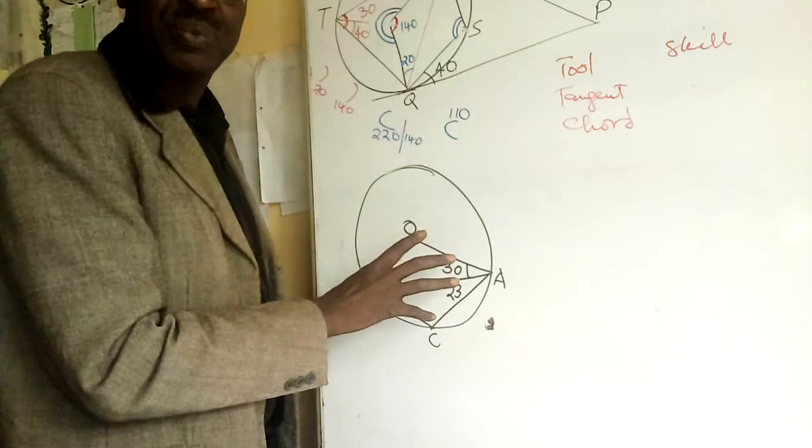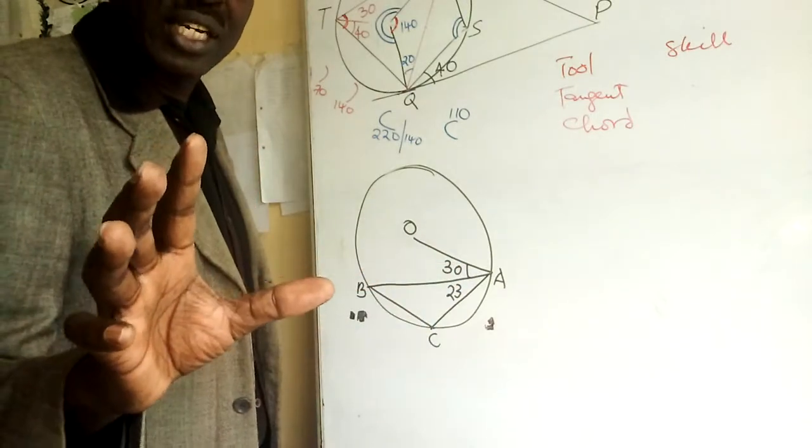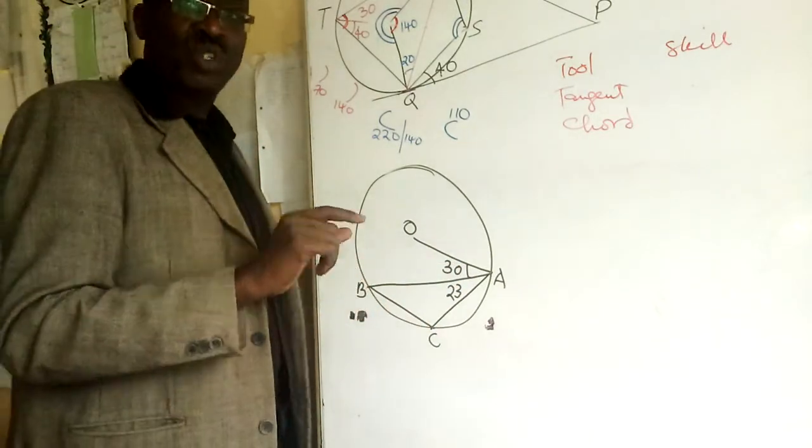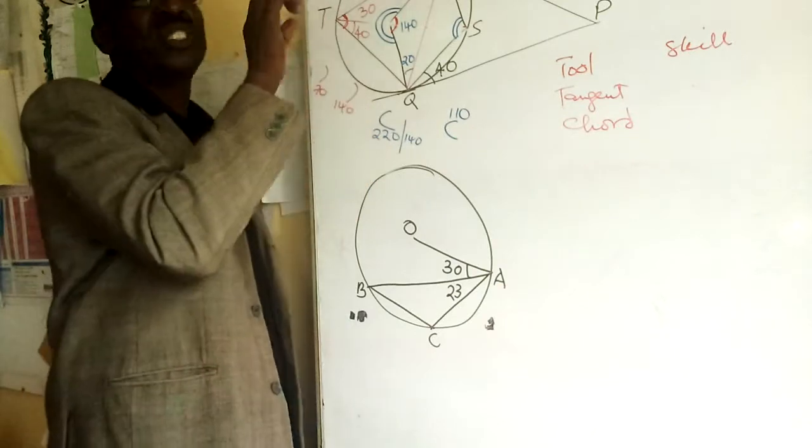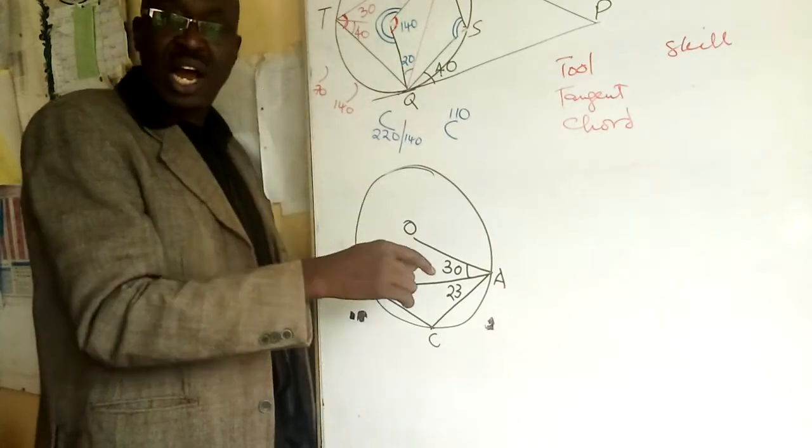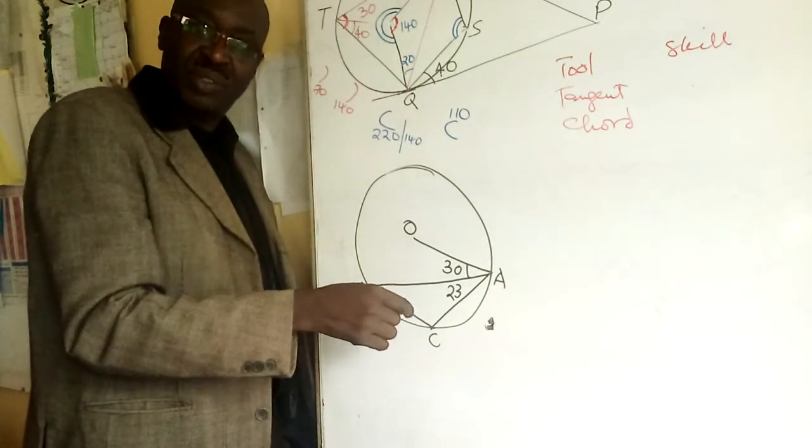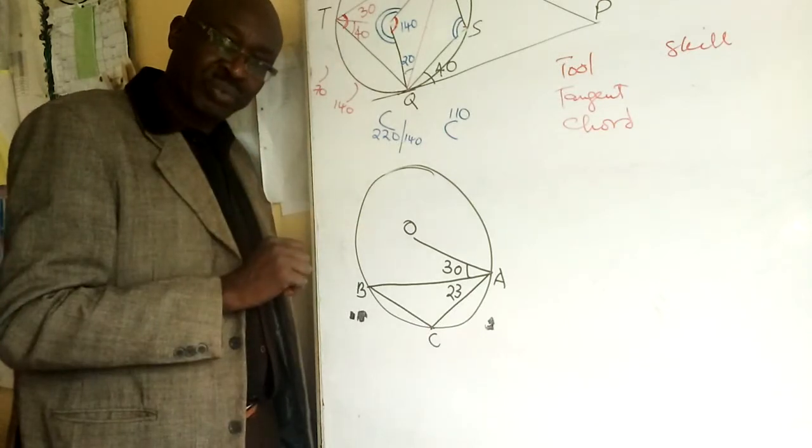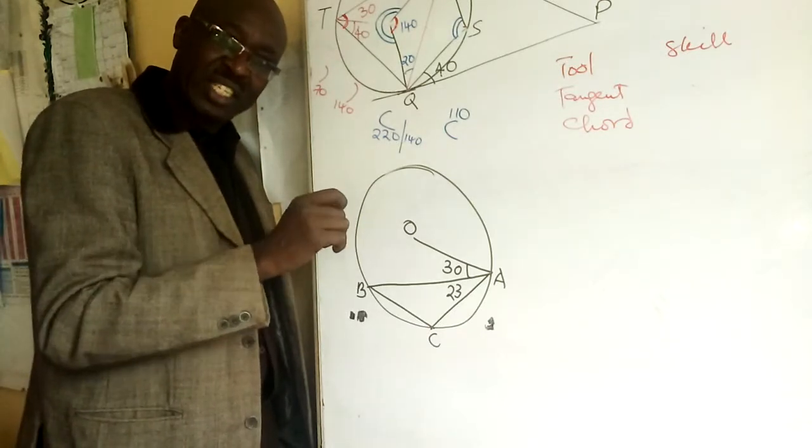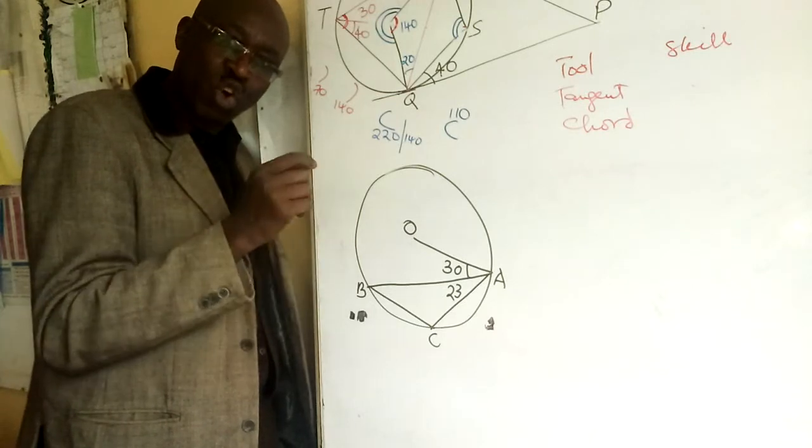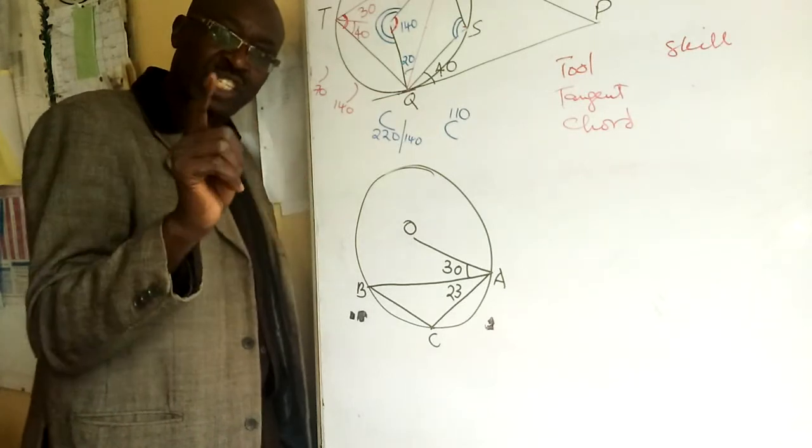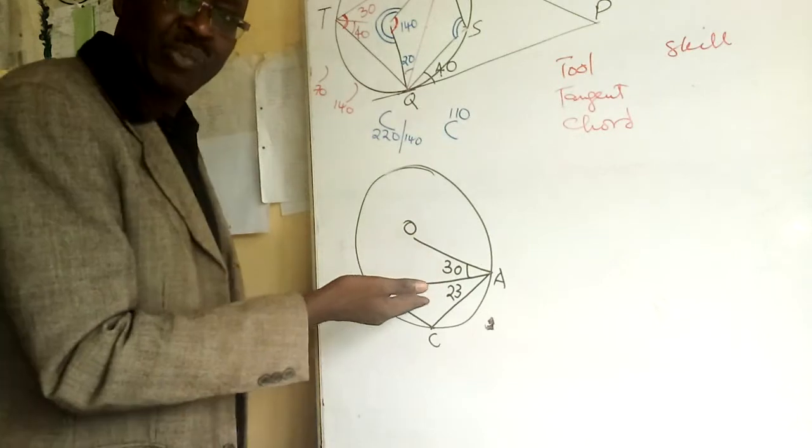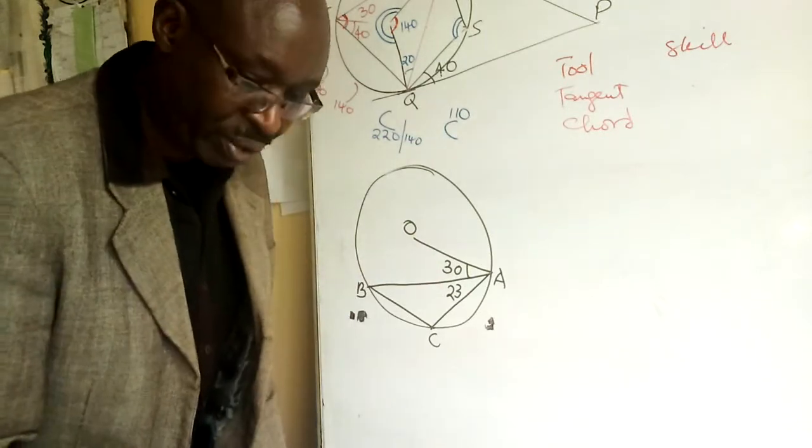There's another question. What are the key things I'm talking about? I'm talking about use the angle given to generate others. Number two, there are some lines that will be hidden or not shown. It is upon you.